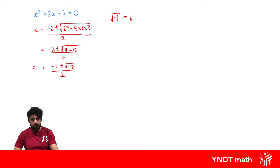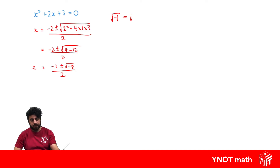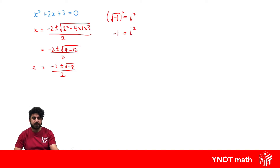Now, the term imaginary numbers might not be the best because we're going to define it as a number, but that's what it's called. The imaginary number i is going to be the square root of minus 1. And if we were to square both sides, the square root and the square cancel out, so minus 1 equals i squared, and this is going to be helpful to us a bit later.